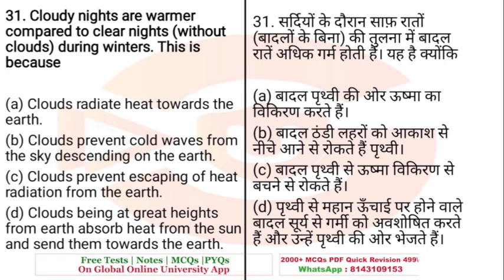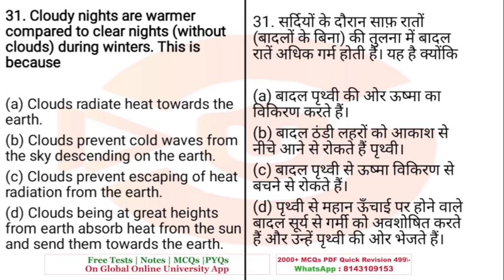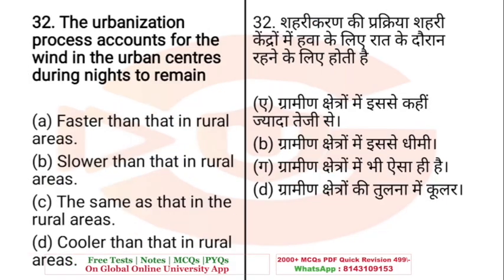Question: Cloudy nights are warmer compared to clear nights without clouds during winter. Why does this happen? A. Clouds radiate heat towards the Earth, B. Clouds prevent cold waves from the sky descending on the Earth, C. Clouds prevent the escaping of heat radiation from the Earth, D. Clouds at great heights absorb heat from the sun and send it towards the Earth. The right answer is C — clouds prevent the escaping of heat radiation from the Earth.